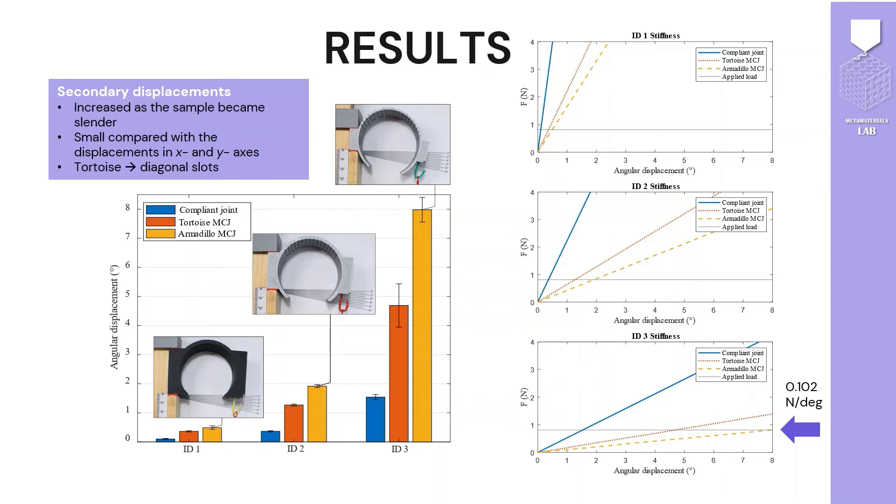Secondary displacements occurred once the load was applied. They increased as the sample became slender. Also, they were small compared with the displacement in X and Y axis. And the tortoise was the joint with the largest angular displacements due to the diagonal slots.